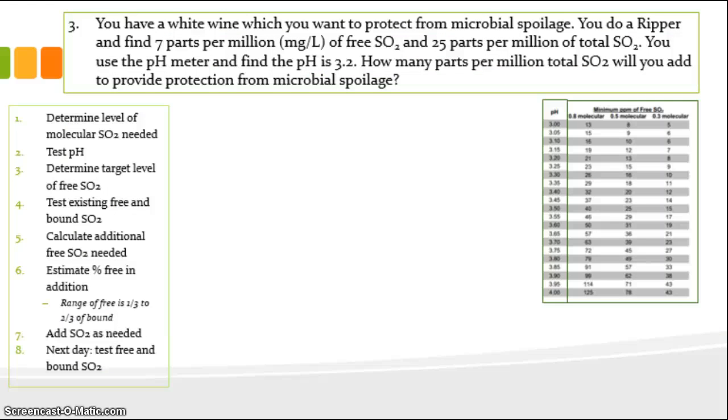You have a white wine, which you want to protect from microbial spoilage. You do a ripper and find 7 parts per million free and 25 total. You use the pH meter and find the pH is 3.2. How many parts per million total SO2 will you add to provide protection from microbial spoilage? All right, so let's go through the steps.